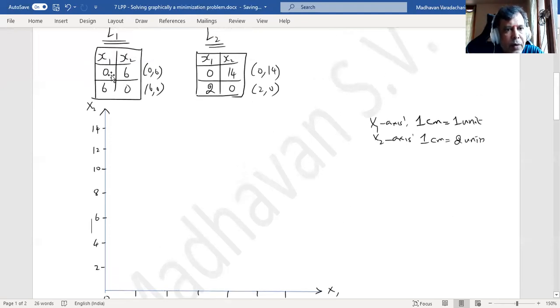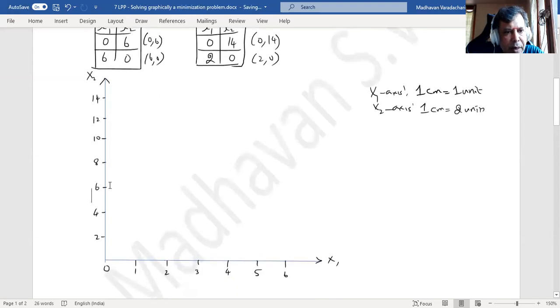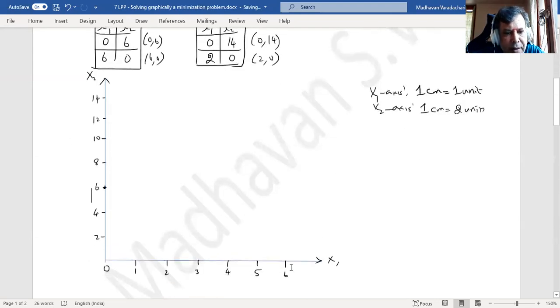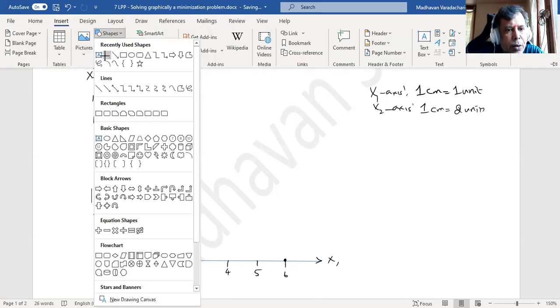Now first L1 we will draw. x₁ is 0, x₂ is 6; and x₁ is 6, x₂ is 0. Let us join these two points.